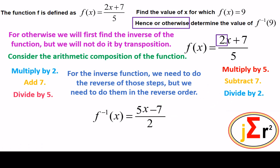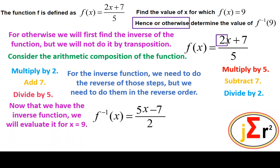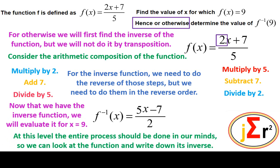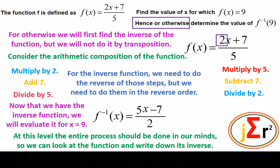We have the inverse of the function as required. On this occasion we will find the inverse of the function — which we have done — and then substitute 9 into it. Now that we have found the inverse, we will evaluate it when x = 9. At this level, the entire process of finding the inverse should be done in our minds, so we can look at the function and write its inverse down.